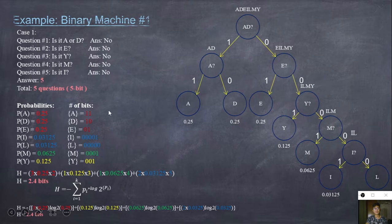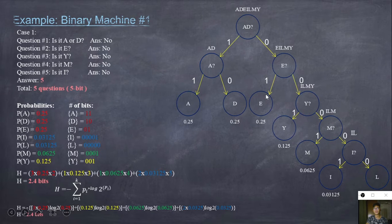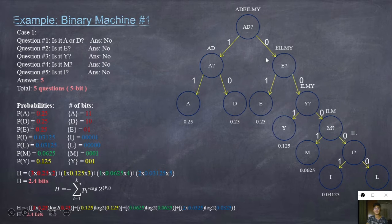For the number of bits, we look for each letter's path through the binary machine. For A, the path is 1 and 1, so the number of bits is 2. For D, the path is 1 and 0, giving 2 bits. For E, it is 0 and 1. For I, the path is 0, 0, 0, 0, 1 — we trace the path to find I.